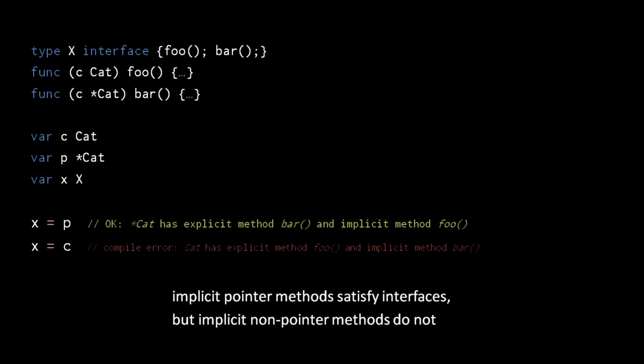Every method you define also implicitly creates a matching method for the corresponding pointer or non-pointer type. For pointer types, these implicit methods do satisfy interfaces, but for non-pointer types they do not. Here for example, our interface x again has two methods foo and bar. We explicitly define foo for cat, and explicitly define bar for pointer to cat. This means we have an implicit method foo for pointer to cat, and an implicit method bar for cat. Neither cat nor pointer to cat satisfy interface x explicitly, but pointer to cat does satisfy x implicitly. So we can assign a pointer to cat value to an x variable, but we cannot assign a plain cat value to an x variable. The rationale behind this asymmetrical rule is that in certain scenarios it helps avoid potential errors.